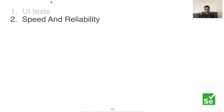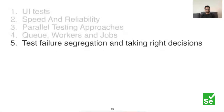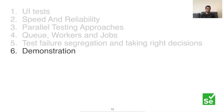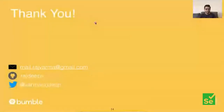My responsibility at Bumble is to keep our tests fast and robust. Today's agenda: UI tests at Bumble and main challenges — speed and reliability — then parallel testing approaches, then queues, workers, jobs, test failure segregation, and taking the right decision, followed by a demonstration and Q&A. On getting quick green builds — the answer is delete all your tests! That's it. Obviously I was kidding — don't do it, you might get fired.